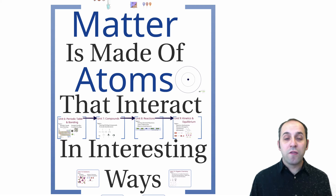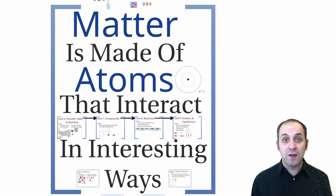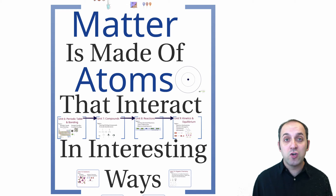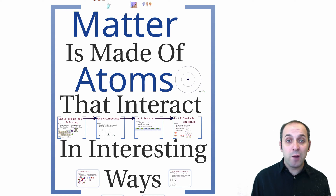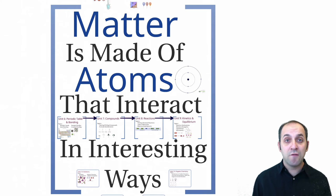As a reminder, our theme for the year is that matter is made of atoms that interact in interesting ways, and we've been dealing with that from the beginning. Our course is basically broken up into four major sections. Our first section dealt with the behavior of large amounts of matter. Our second section dealt with an investigation of the atom itself and the internal structure of the atom. And our third section has dealt with the interactions between different groups of atoms.